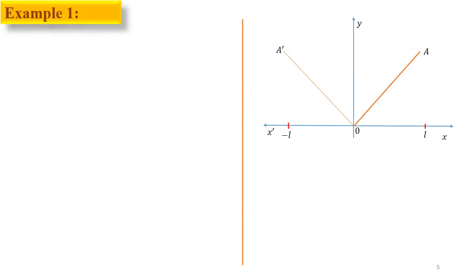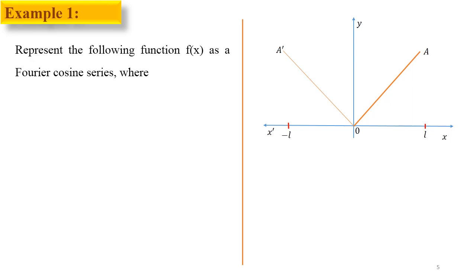Let's take one example of the half-range sine and cosine series. In the first example we have to find the Fourier series of the function f(x) = x on the interval 0 to L. As you can see in the figure, the function f(x) = x is given and its reflection is extended into the second quadrant from 0 to −L.